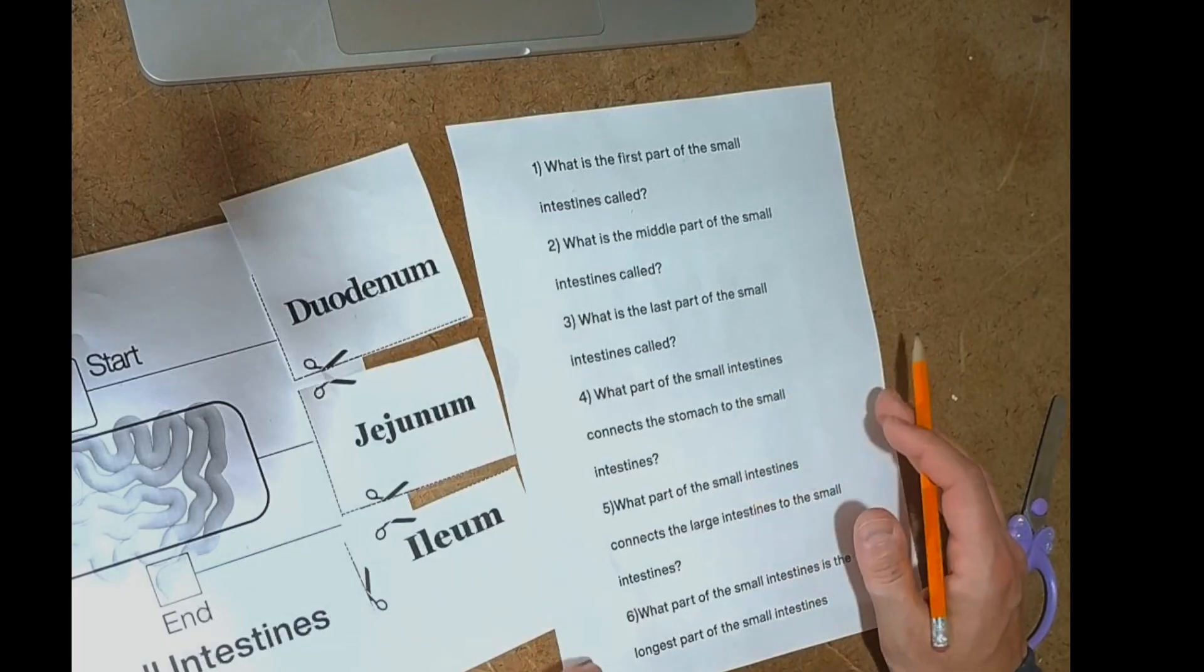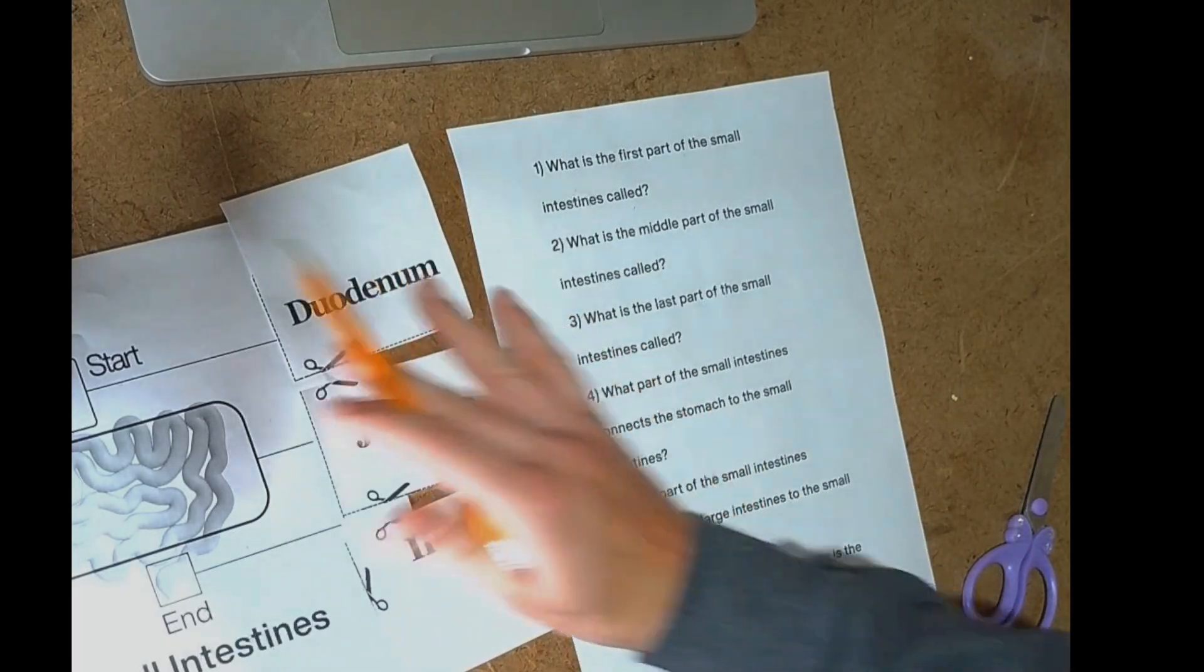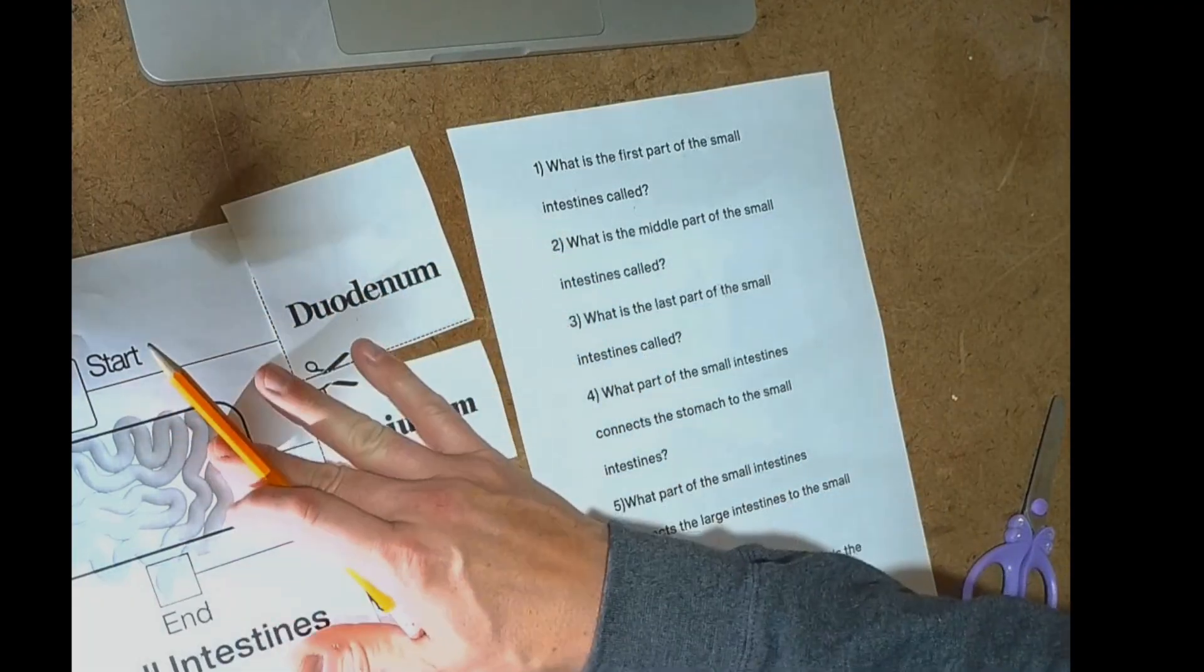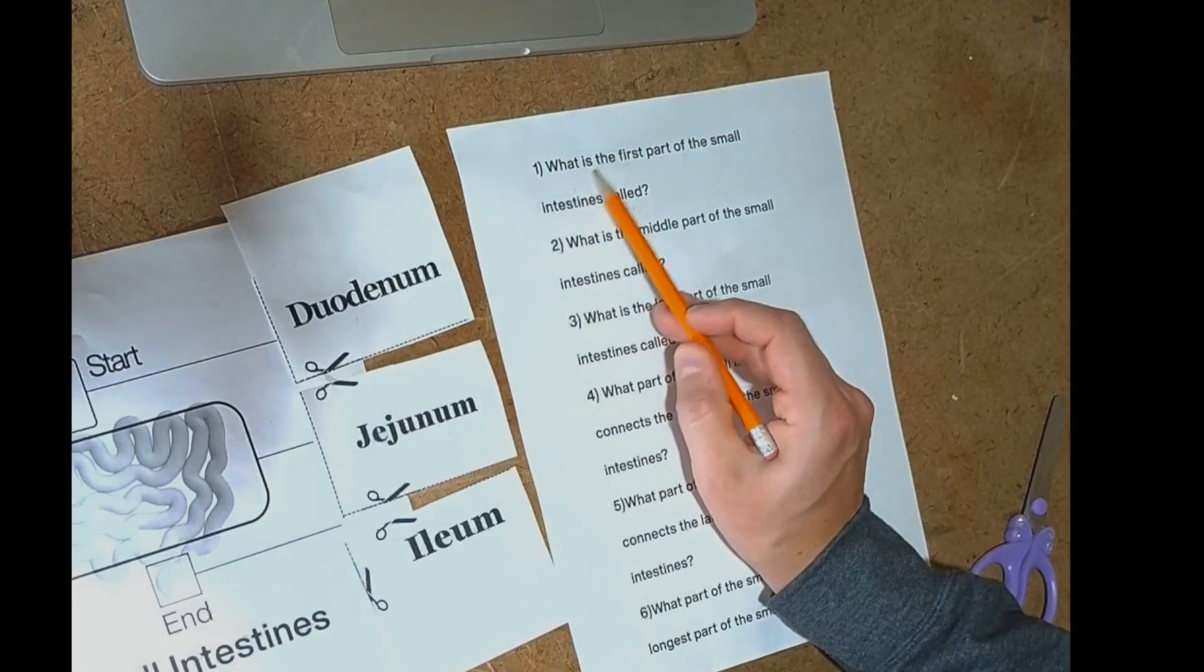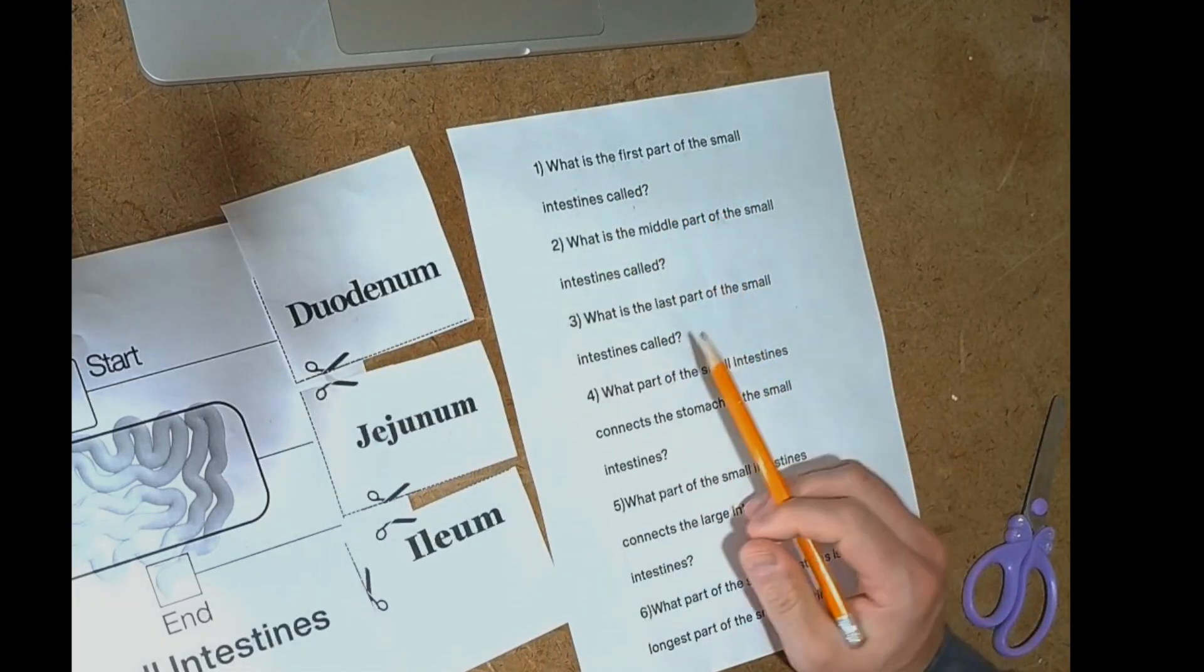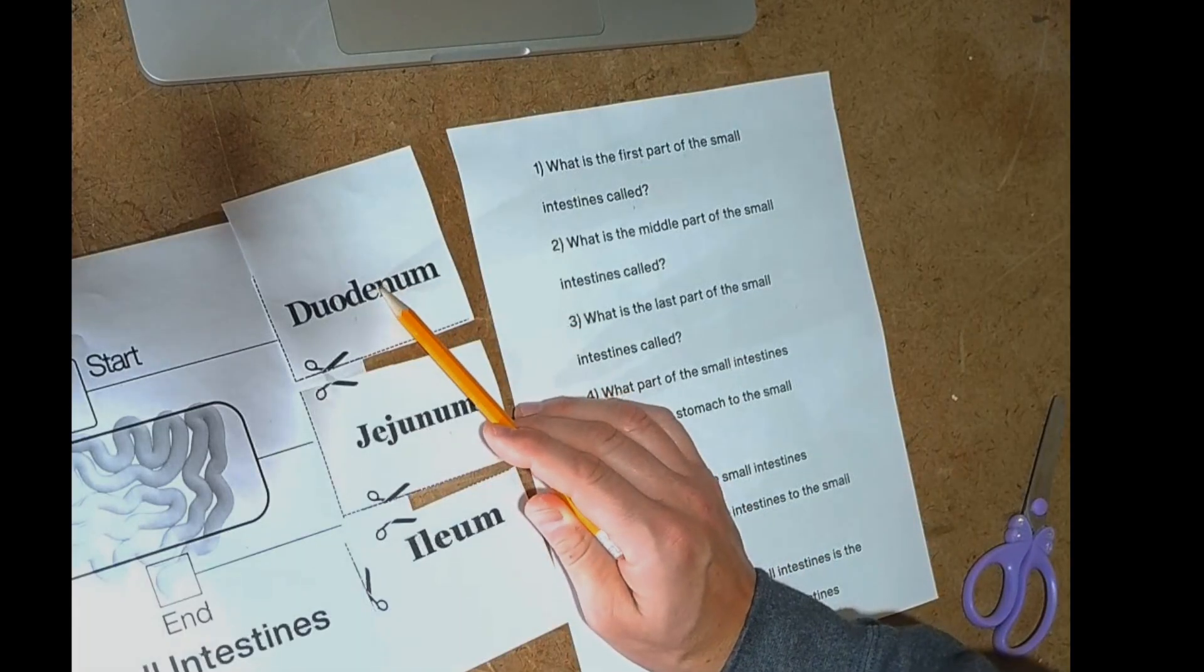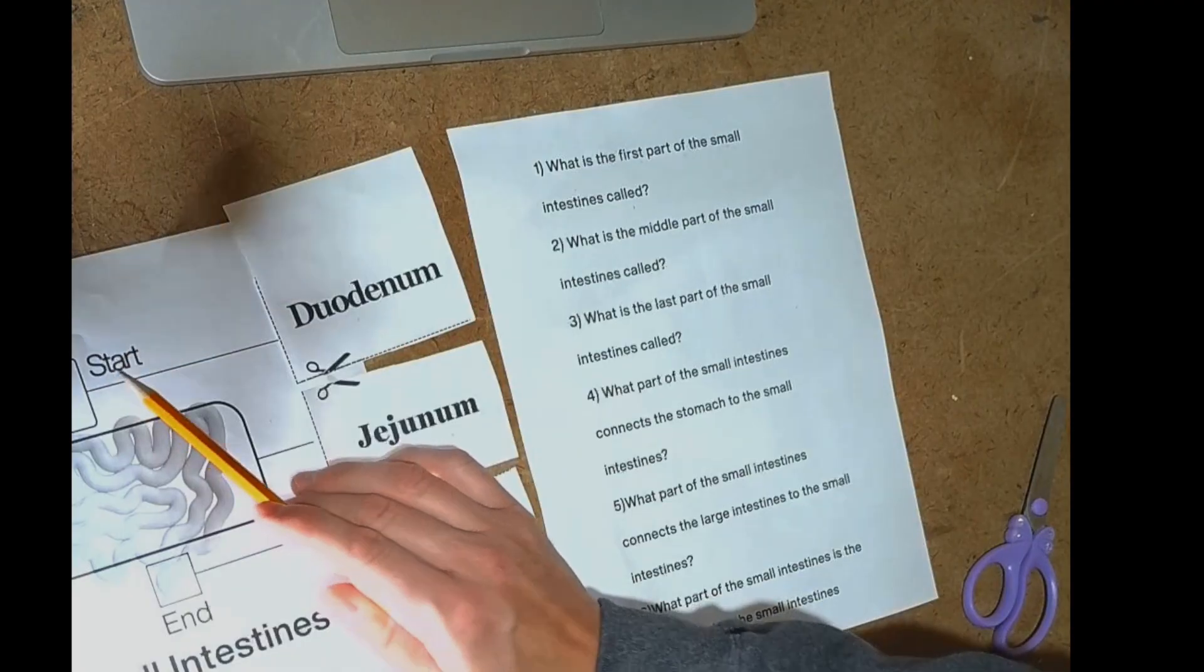The first question is, and please feel free to look back to our diagram if you're not sure of what the intestinal tract portion is called, or where it starts or ends in the intestines. The first question is, what is the first part of the small intestines called? If you know it, go ahead and just say it out loud. If you're not sure, let's look back.